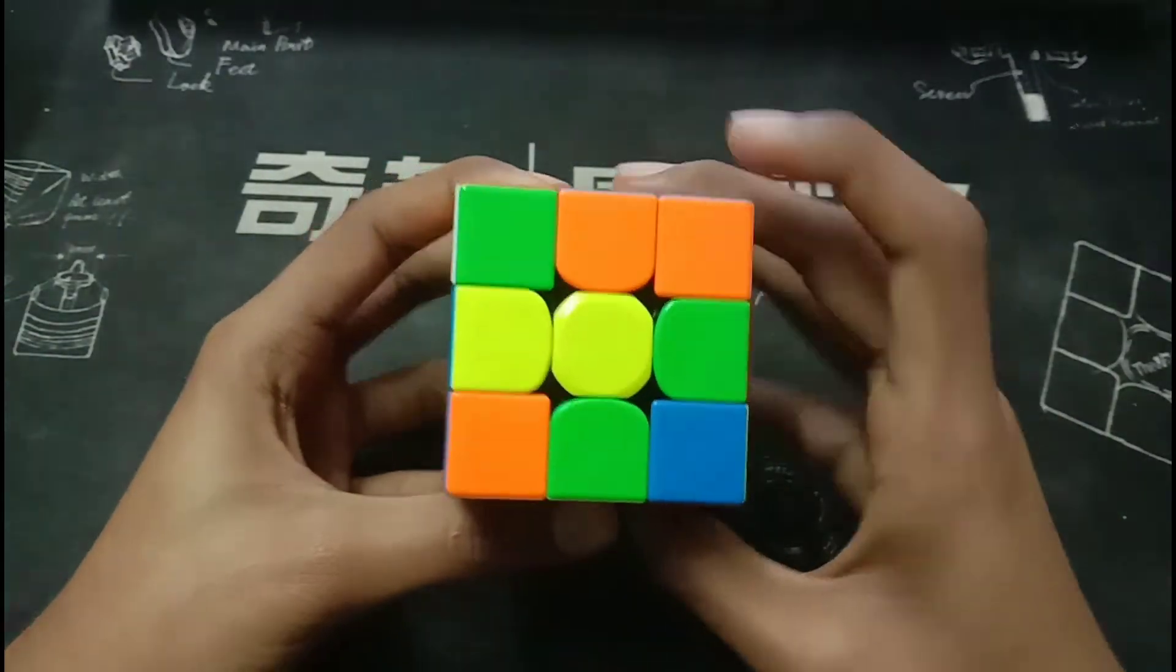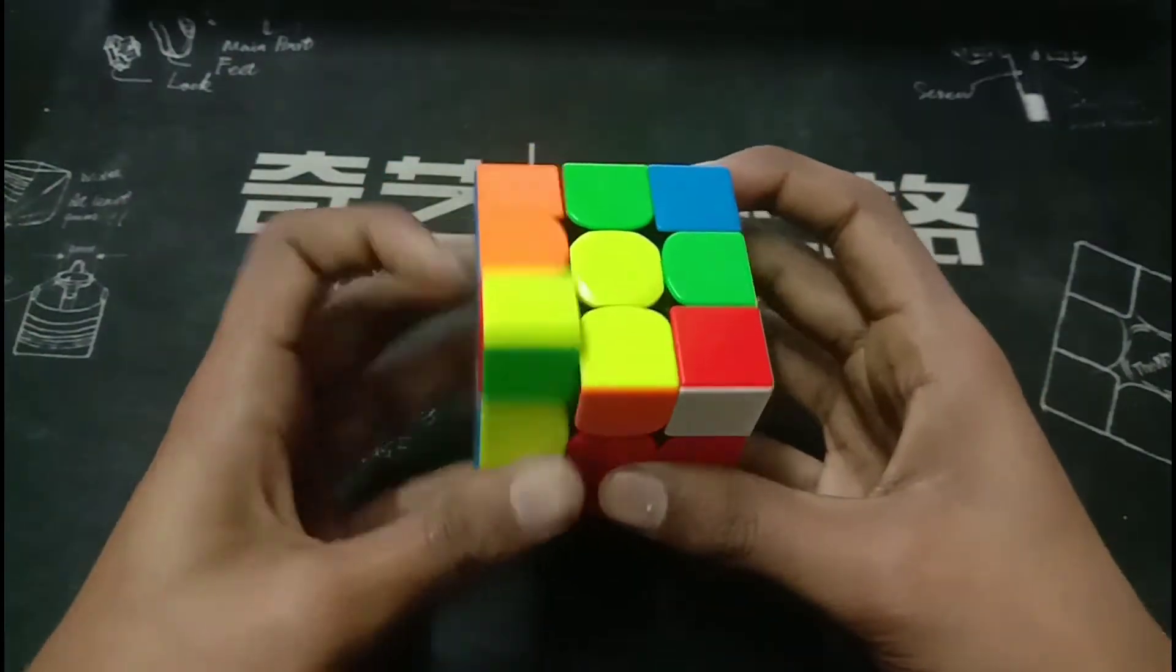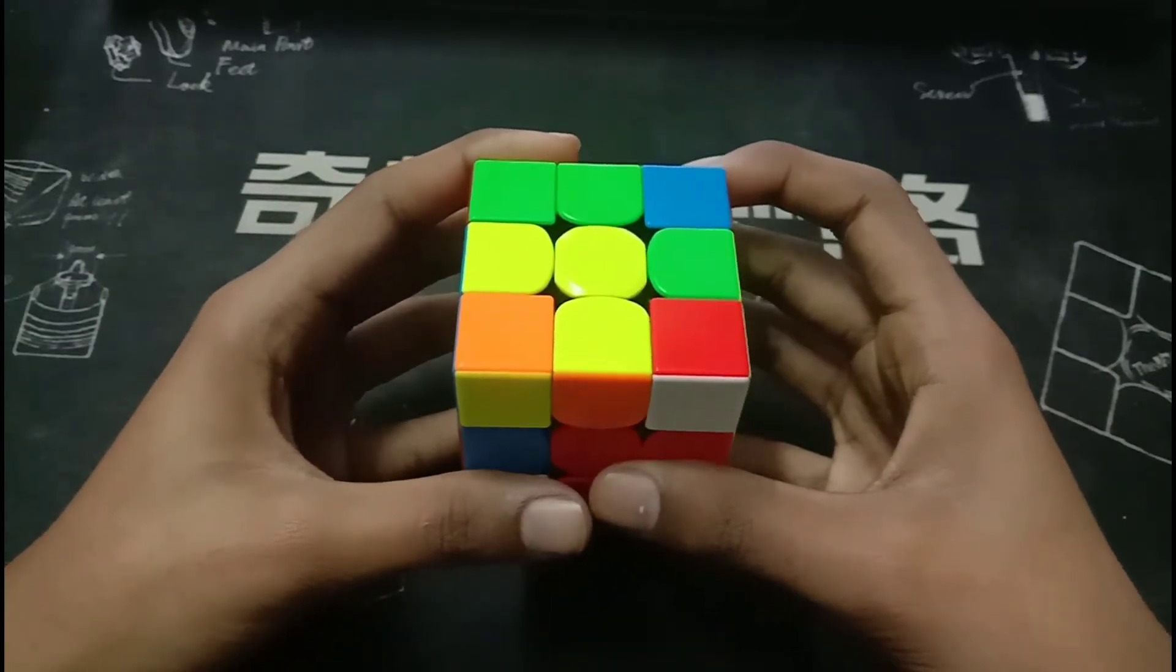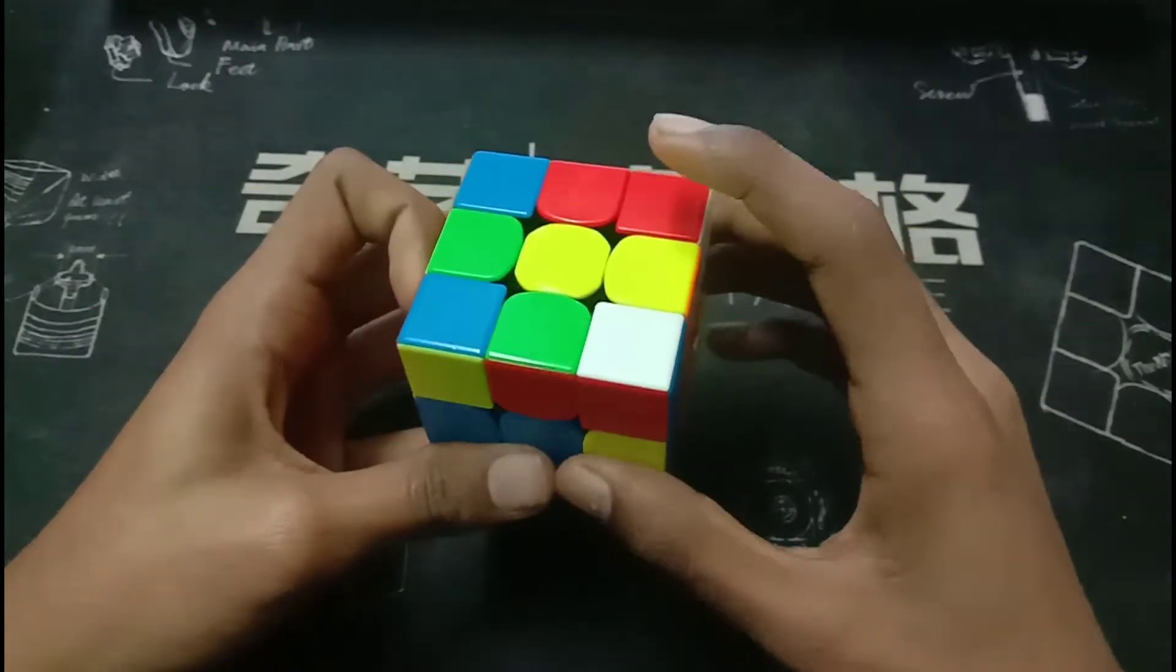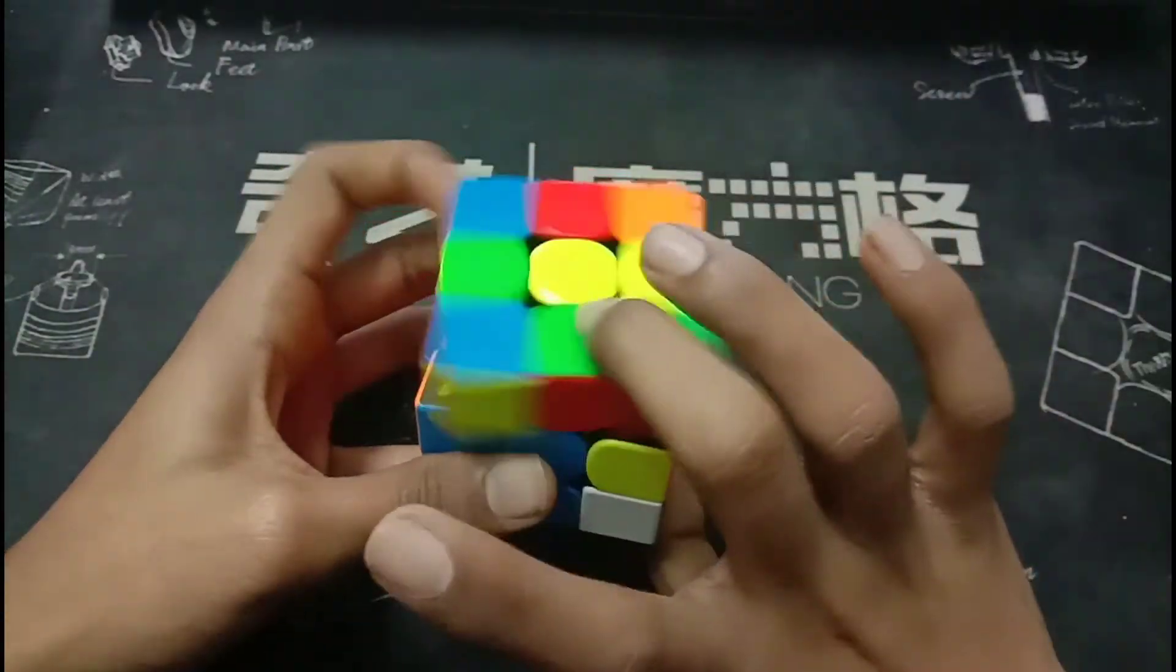Now you can see we have a free pair right here. So we can insert it into the back. Then he rotates. He sees this pair, three mover, into the back.